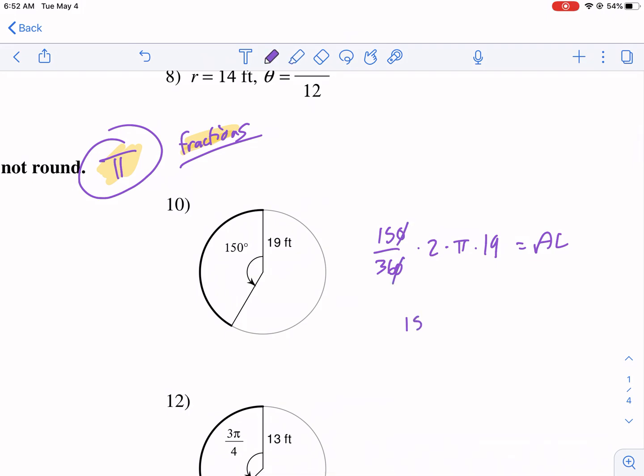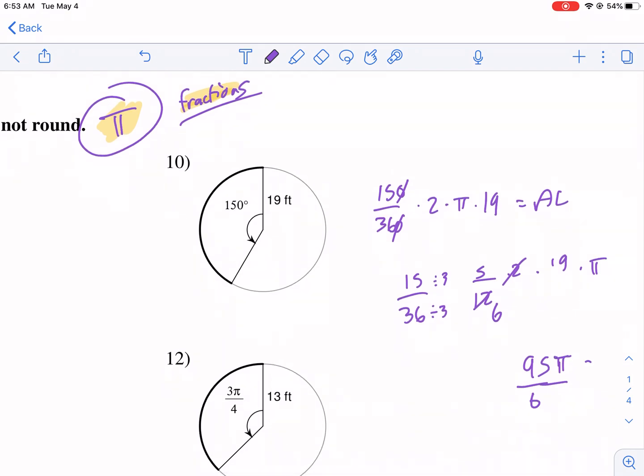First, I'm going to cancel this. So I have 15 over 36. I can divide both by 3 and I get 5 over 12. That can't be reduced. Times 2. That can reduce with that. So we have 5 over 6. And then we have times 19. So we have 19 times 5 in the top, 19 times 5, over 6. So that's 95 over 6. I forgot the π too. 95π over 6. I don't think those have any common factors. And they don't. So 95π over 6 feet would be our answer there for that one.